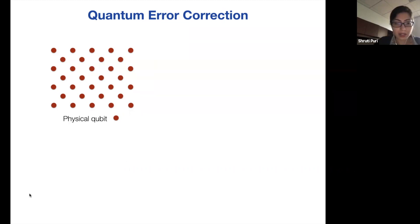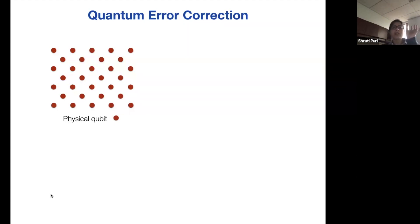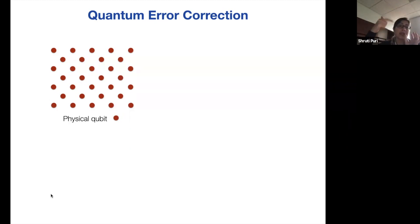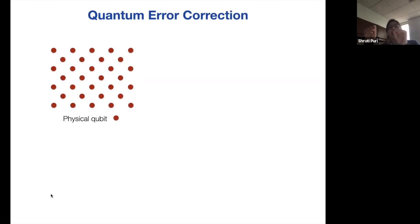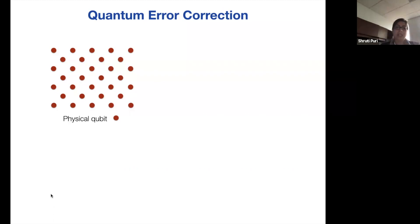There's a question in the chat: can you repeat the distinction between logical error probability and the original bit flip error probability? The logical error probability is the probability of an error in the entangled state, versus the physical error rate. If I did not make that three-qubit code and just used one qubit in a superposition x|0⟩ + y|1⟩, the probability of an error would be p_x. But when I make this entangled state x|000⟩ + y|111⟩ and do error correction on it, the probability of error in that entangled state — the logical error — is going to be smaller than p_x, proportional to p_x squared.